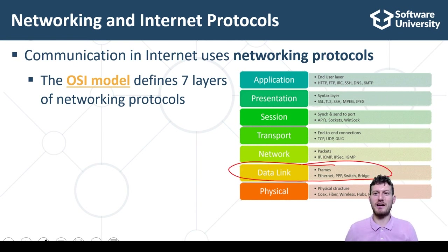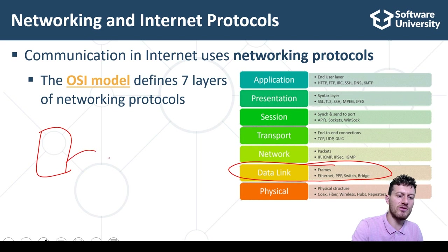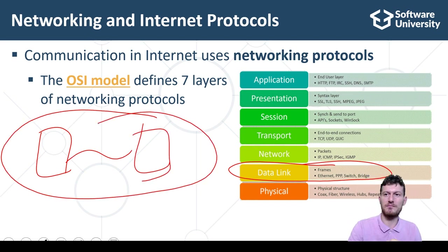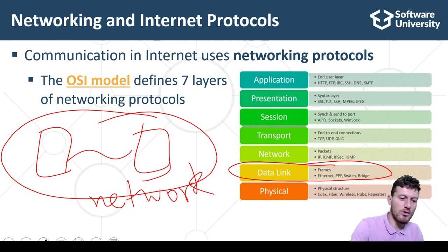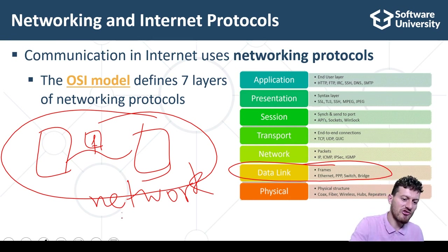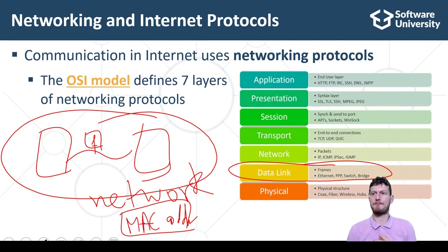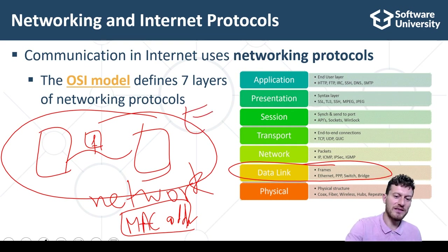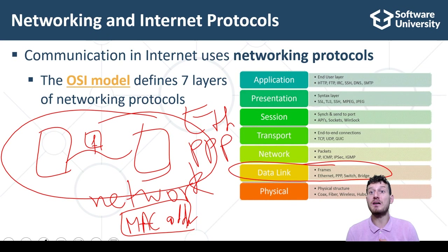Layer two, the data link layer, provides node-to-node data transfer — a link between two directly connected nodes in the same network. The data transfer is split into packets called frames. Hardware such as Ethernet adapters and modems are responsible for transmitting the frames over the physical connections. At layer two, communication devices are identified by hardware adapters. Typical data link layer protocols are Ethernet and PPP, Point-to-Point Protocol. Network switches are typical hardware for the data link layer.